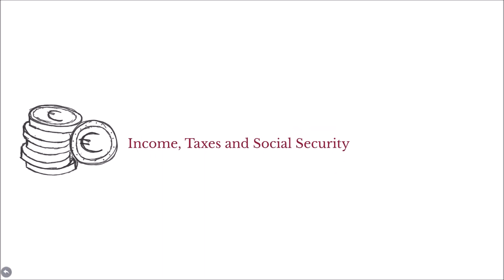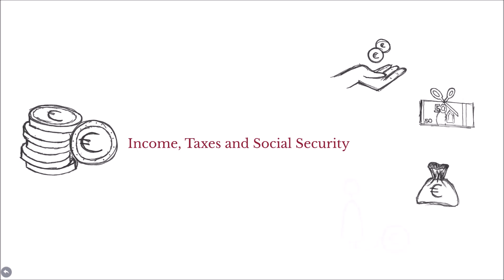Within income, taxes and social security, there is information on participants' household income, income from dependent employment, self-employment, and from other sources such as income from rental contracts, inheritance, and capital income, but also social security payments and unemployment benefits. We also provide information on wealth, debt, and saving habits.